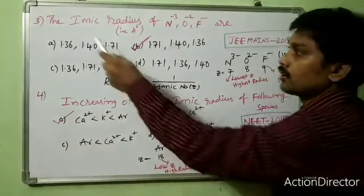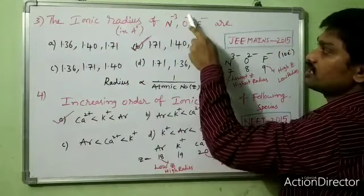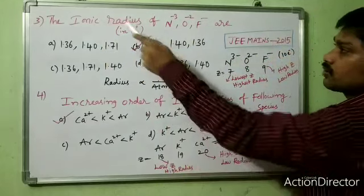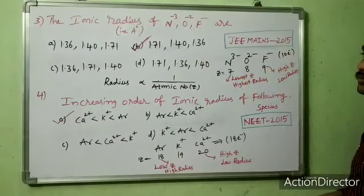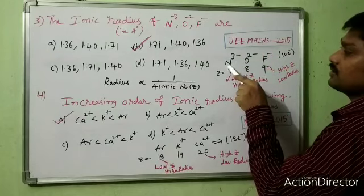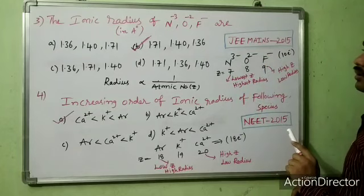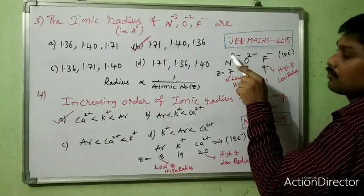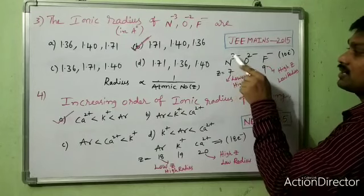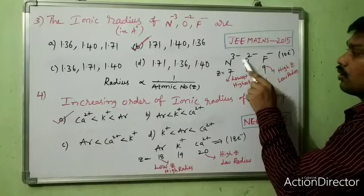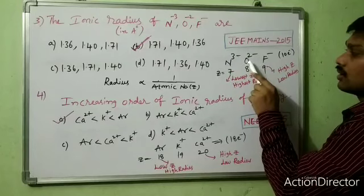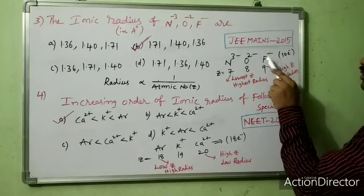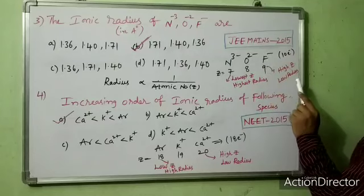Third question: the ionic radius of N³⁻, O²⁻, and F⁻ in angstroms. This question is from JEE Mains 2015. N³⁻ — nitrogen has 7 protons, gaining 3 electrons: 7 plus 3 equals 10 electrons. O²⁻ — 8 protons plus 2 equals 10 electrons. F⁻ — 9 protons plus 1 equals 10 electrons. All three species have 10 electrons, making them isoelectronic.